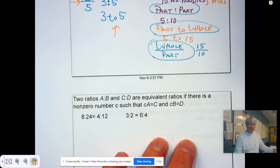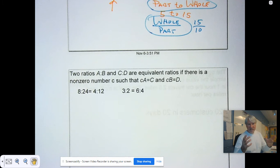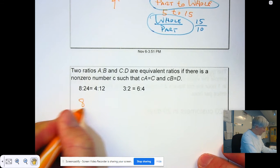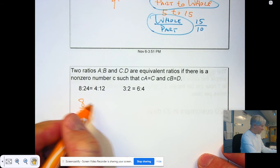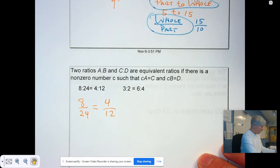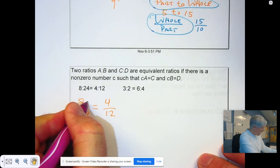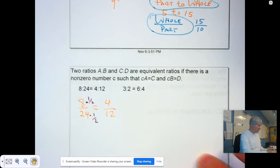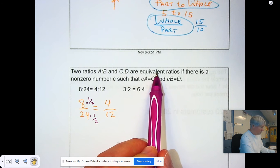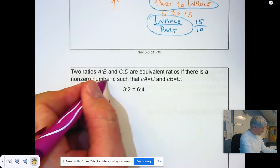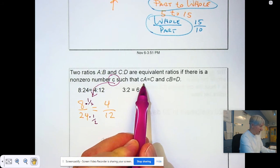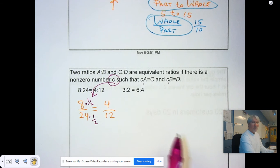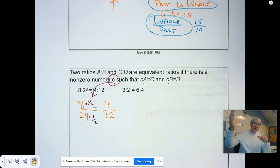You notice one way that we wrote ratios was as a fraction. So, this 8 to 24 could be 8 over 24. The 4 to 12 could be 4 to 12. Those two are equivalent fractions. If I take half of 8 and half of 24, I get 4 and 12. And instead of multiplying by one half, you may have thought divide by 2. The reason why I multiplied is because if you have two ratios that are equivalent, there's a non-zero number. That's what I did with the one half, so that if I took one number times a half and the other times a half, I would get the other two values.